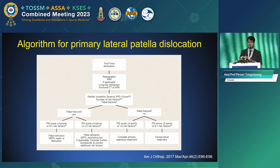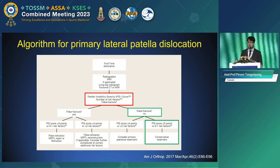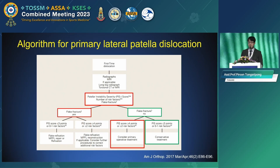The treatment algorithm for primary lateral patella dislocation begins with radiographs and MRI, long-leg radiograph, and torsional CT or MRI. Using the PIS score and number of risk factors: if no flake fracture and PIS score below three or zero to one risk factor, conservative treatment is recommended. If PIS score exceeds four or more than two risk factors, consider primary operative treatment. If a flake fracture is present with PIS score above four or more than two risk factors, perform flake refixation, MPFL reconstruction, and consider further procedures to correct additional risk factors.